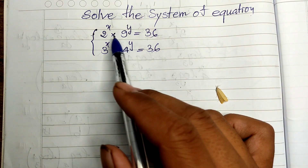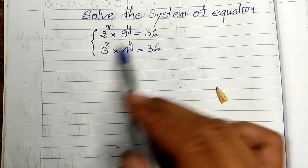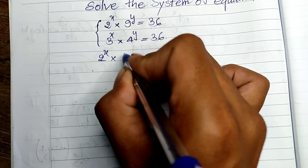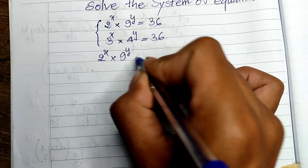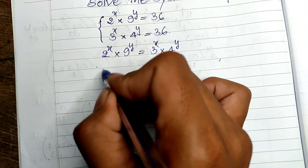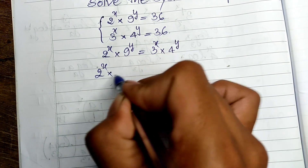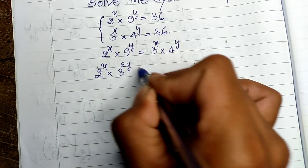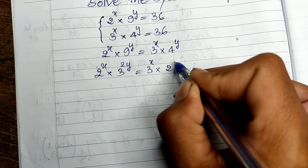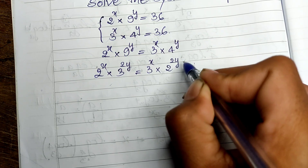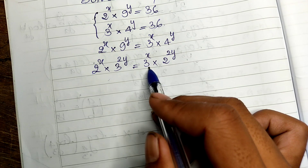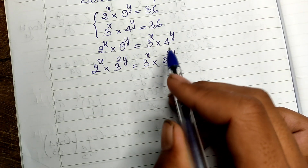Since both equations equal 36, we can set them equal: 2^x times 9^y equals 3^x times 4^y. Now we rewrite this — 9^y equals 3^(2y) and 4^y equals 2^(2y) — so we get 2^x times 3^(2y) equals 3^x times 2^(2y). Then I divide both sides to simplify.